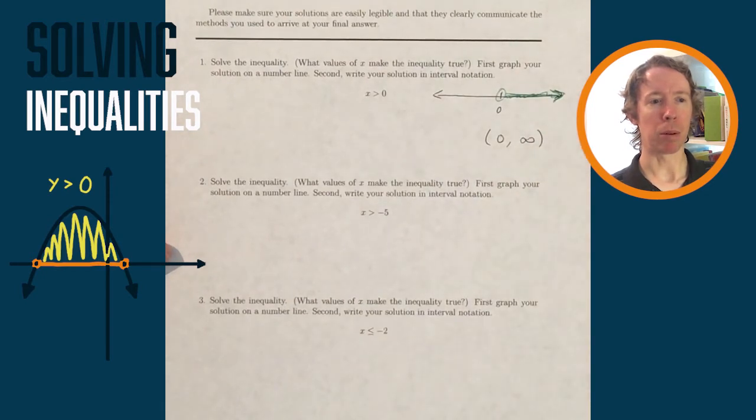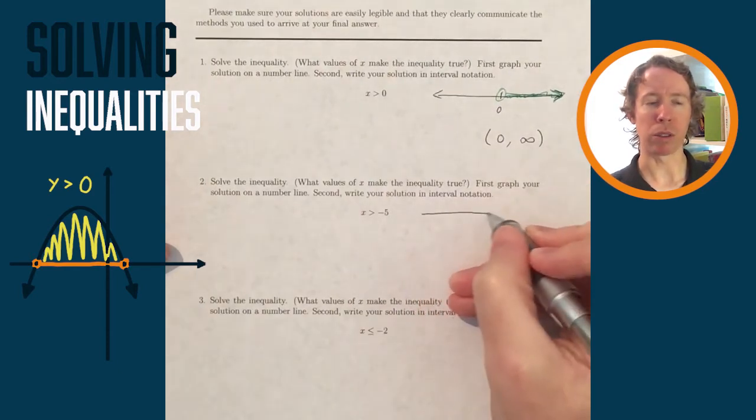I put parentheses around the zero and then I put comma infinity to say that it's going out forever to the right.